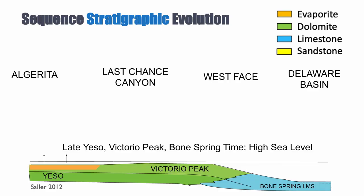Let's sum up the sequence stratigraphic evolution of the Guadalupean in Texas. Previous to the Guadalupean, we have two carbonate formations — the Yeso and Victorio Peak formations — so carbonates. You can see they form a gentle ramp.